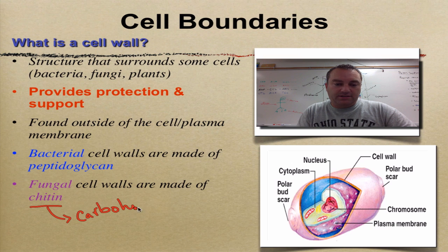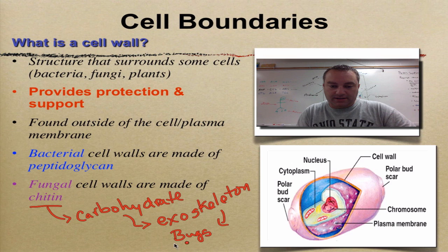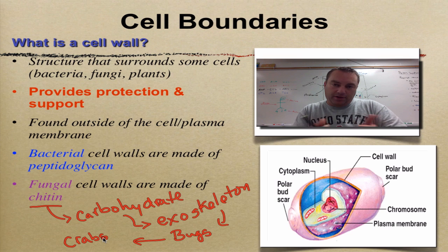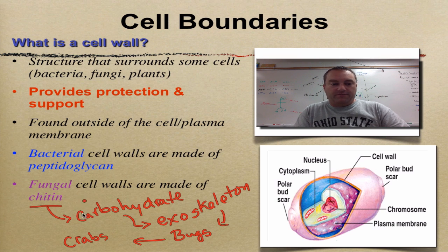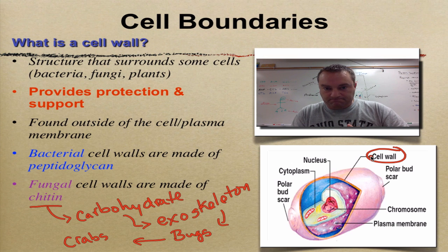Chitin is the same carbohydrate that's used to make the exoskeleton — exo means outside, and skeleton means skeleton — of bugs, also known as insects, and crabs. So whenever you're peeling shrimp, cracking open a lobster, or you step on a bug and hear it crunch, you're breaking down this carbohydrate called chitin. And it just so happens that chitin is also used to make the cell wall in a fungus — think of mushrooms, yeast cells, and various molds.